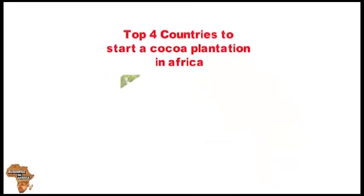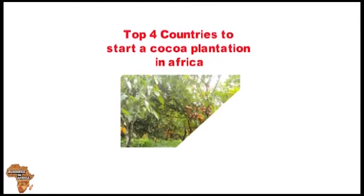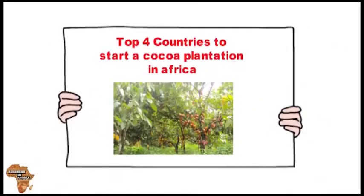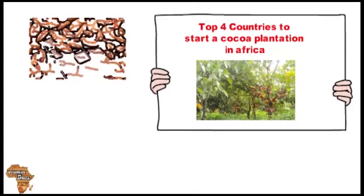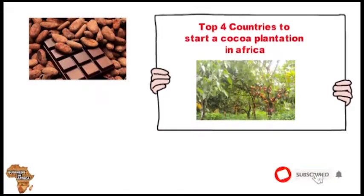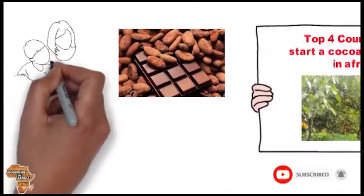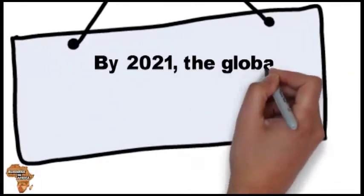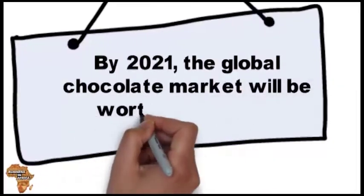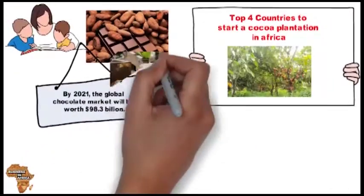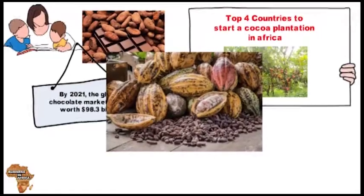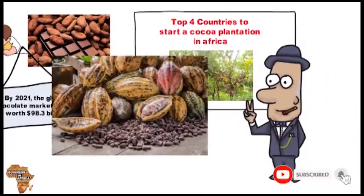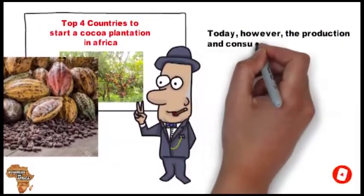Top four countries to start a cocoa plantation in Africa. While cocoa originated in Central America over 5,000 years ago, its popularity and production has spread globally. Chocolate means many things to different people — a special treat, a guilty pleasure, or a delicacy to be evaluated much like wine. But for many people around the globe, it's also serious industry. By 2021, the global chocolate market will be worth 98 billion US dollars.